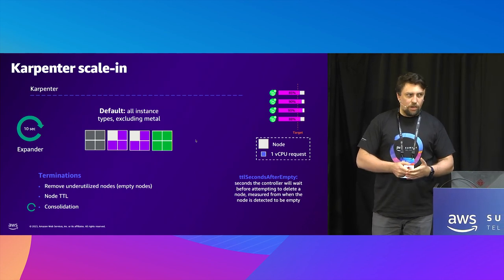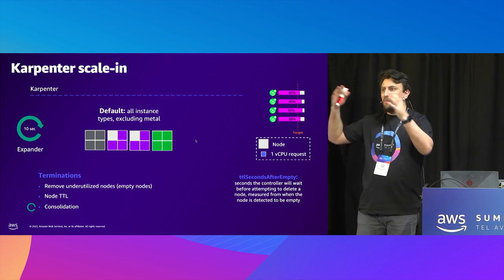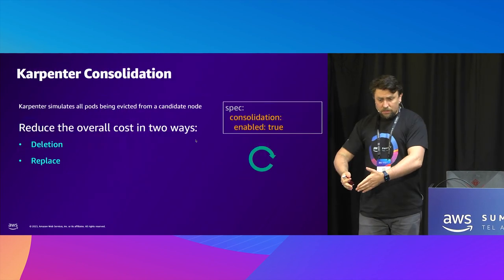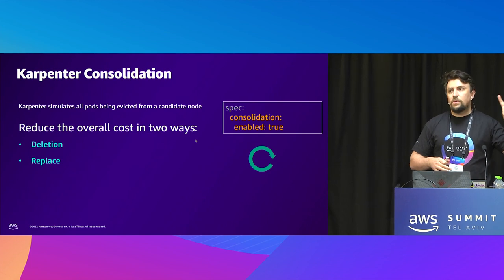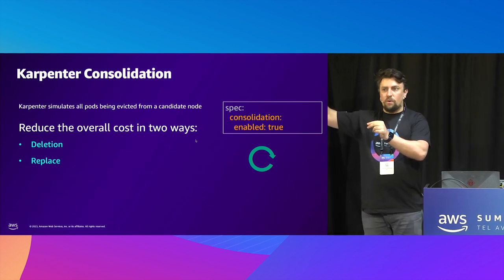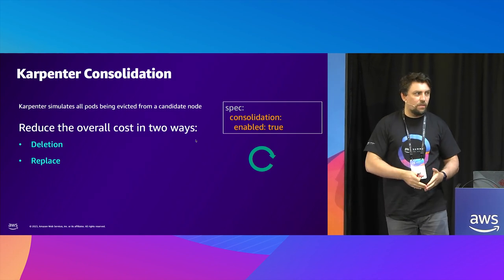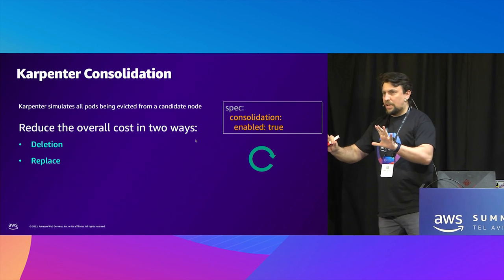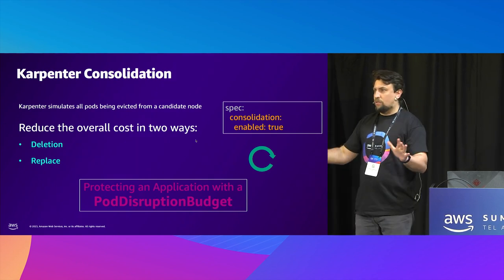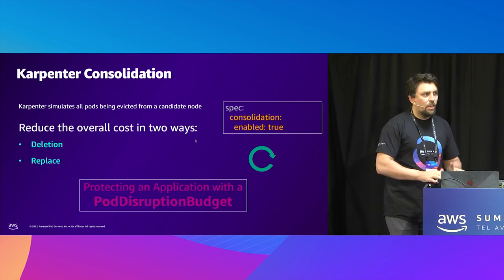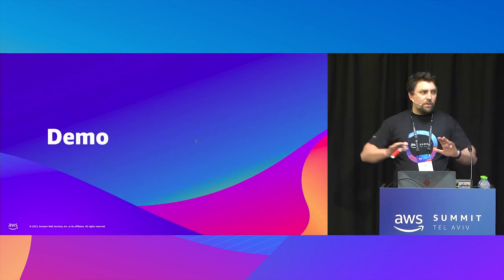What will happen in the consolidation situation? Karpenter will run a simulation of how many resources it needs to proceed with the current amount of pods and resources, and delete, for example, a node. In consolidation, we have two main approaches: the first one is delete node, and the second one is replace. Maybe if you replace a node with a cheaper one and move some pods to the new node, the efficiency and cost-effectiveness will be better. But be careful — please set up your pod disruption budget and make sure you are not losing your application. If you're not familiar with pod disruption budget, after this session it's something you have to read and understand.